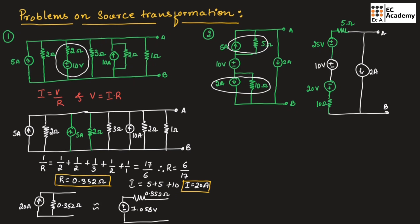Now if we add all these voltage sources, since they are connected in series we will get 25 volts + 10 volts − 20 volts = 15 volts. So we can write a single voltage source with 15 volts. We can take the polarity as positive and negative.